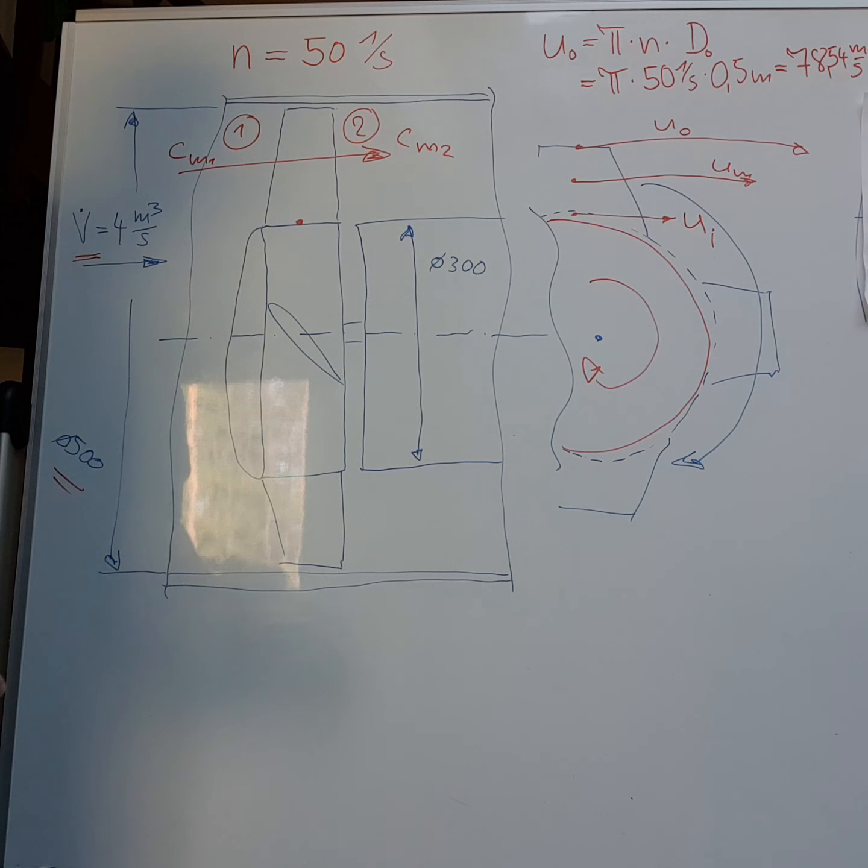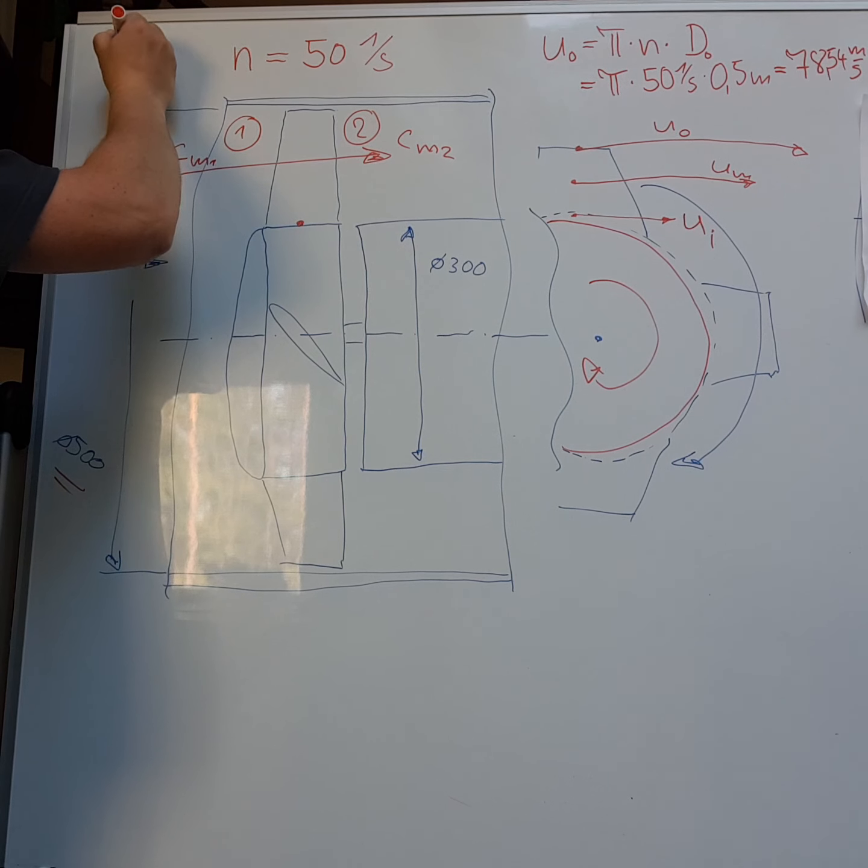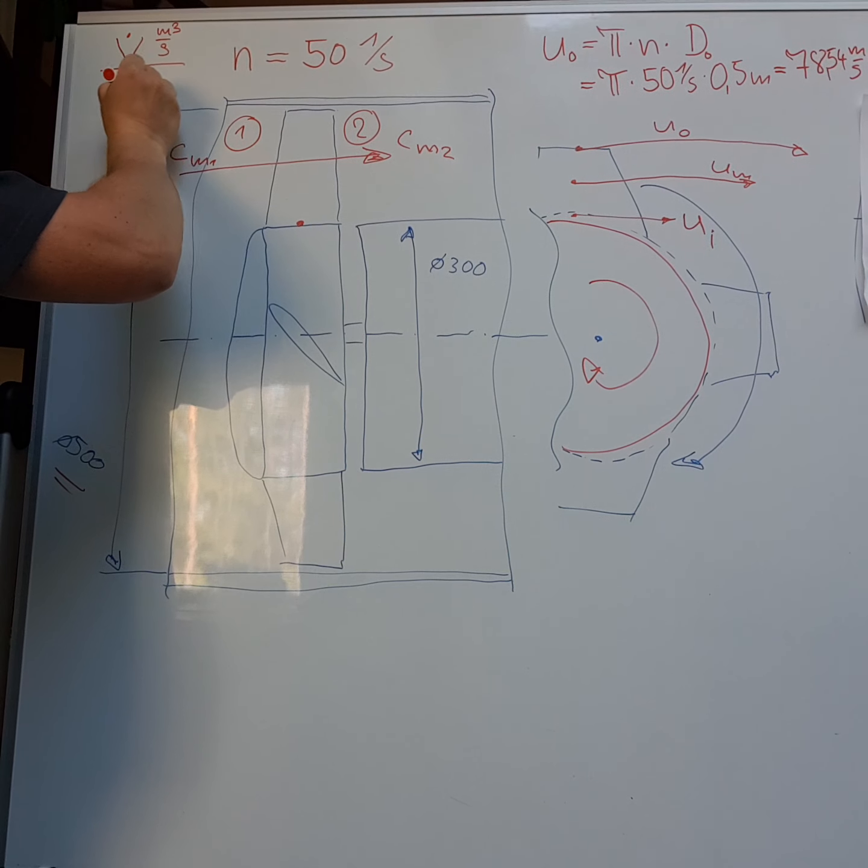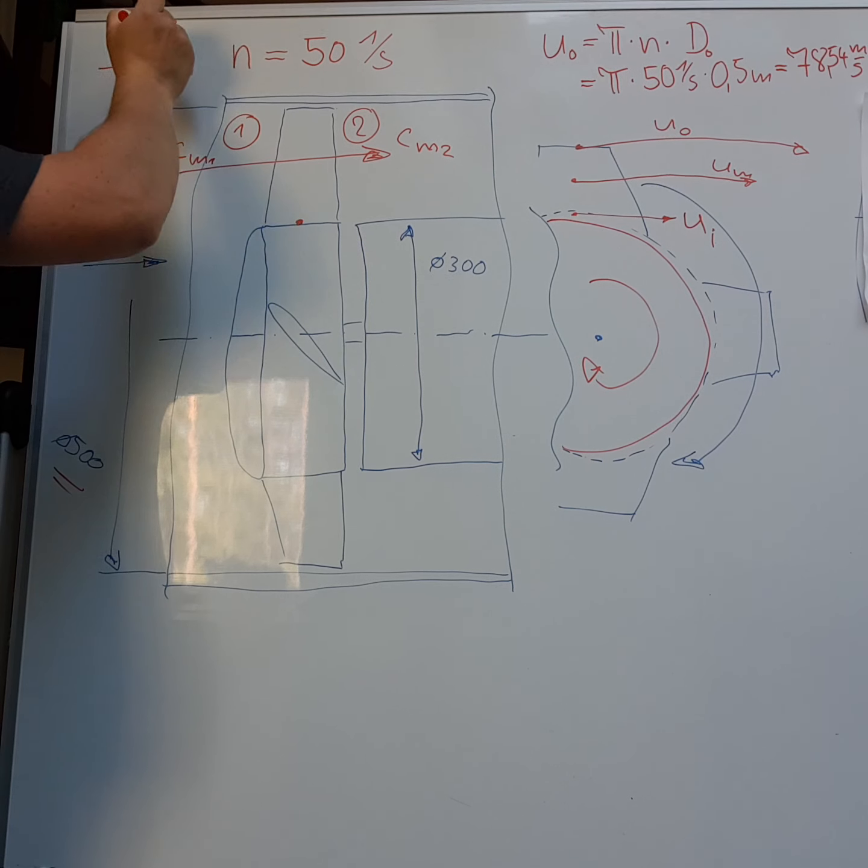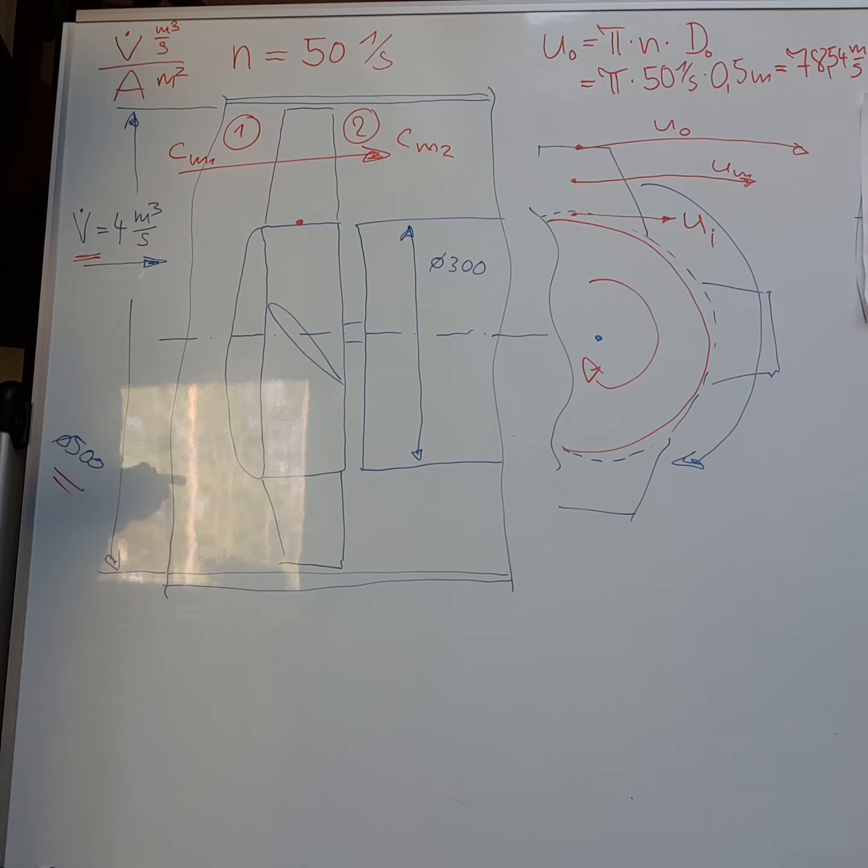If we have volume flow in cubic meters per second and we divide it by the area in square meters, then we get meters per second. And that's what I want to do for you.